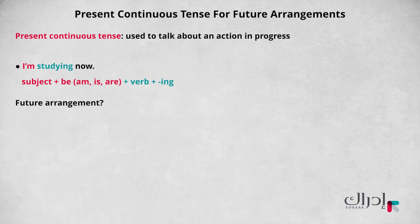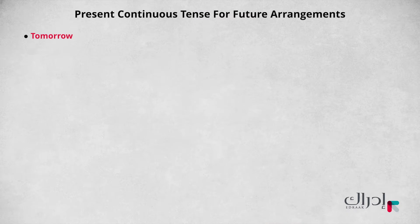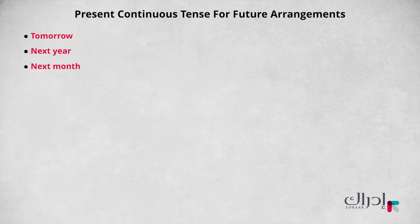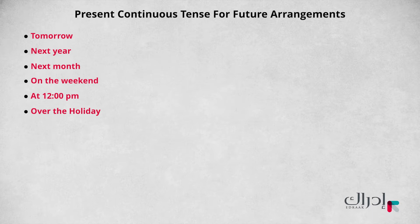All you need to do is add a time reference. Take a moment to look at these next examples. Can you notice the time references? Tomorrow, next year, next month, on the weekend, at 12 o'clock, over the holiday. Can you think of any more? So, we can use the present continuous to talk about arrangements at a time later than now.